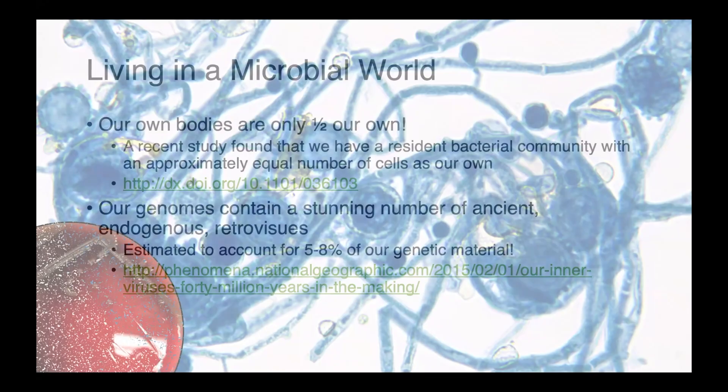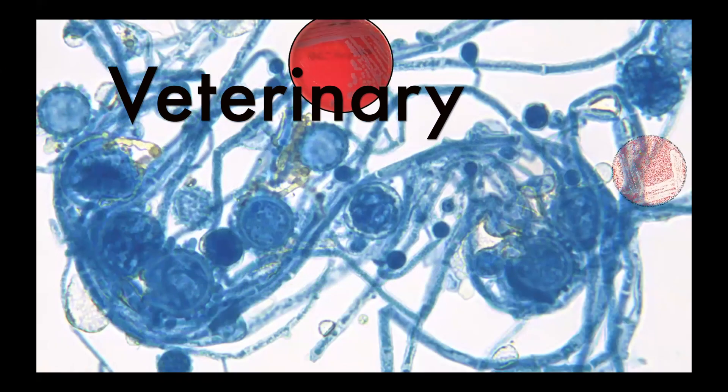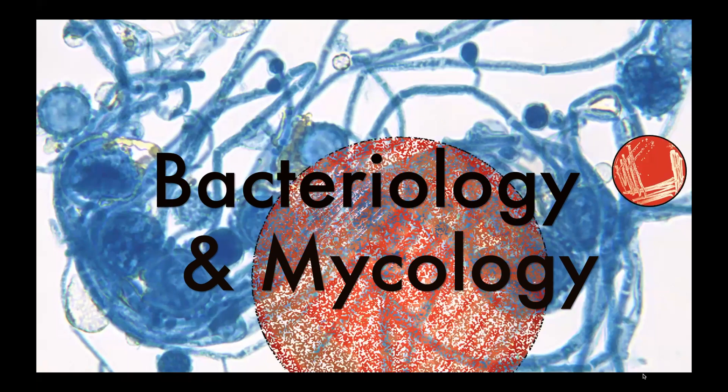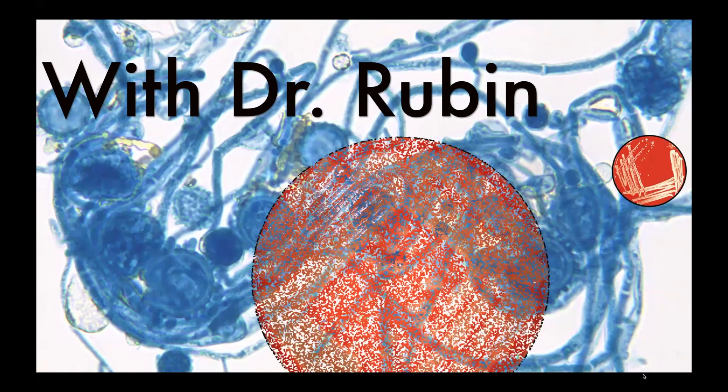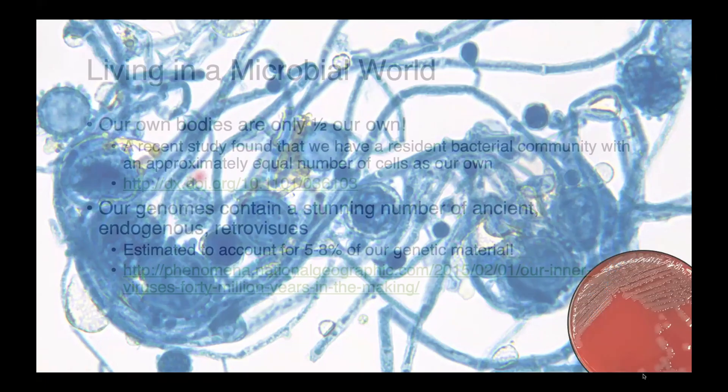The ability of a microorganism to cause an infection is much more complicated than simply the presence of virulence factors in that organism. Disease is an outcome of a host-microbe interaction, and we need to think about it much more in terms of shades of grey than black or white — it's a pathogen or it's not a pathogen. Today we're going to be talking about why disease happens and what it is about some host-microbe interactions that leads to that outcome.